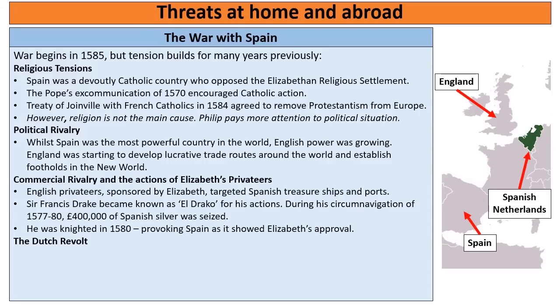More exciting is the commercial rivalry. This is the actions of privateers like Sir Francis Drake, sponsored by Elizabeth, who targeted Spanish treasure ships — the huge fleets coming back from the New World laden with gold and silver every year. Drake is the most famous of these, known in Spain as 'El Draco' because of his ferocity. In one journey, his circumnavigation of the world, he stole £400,000 of Spanish silver — millions of pounds today. Most provocatively, in 1580 when he returned from this journey, Elizabeth knighted him on the deck of his ship the Golden Hind, publicly approving his actions.